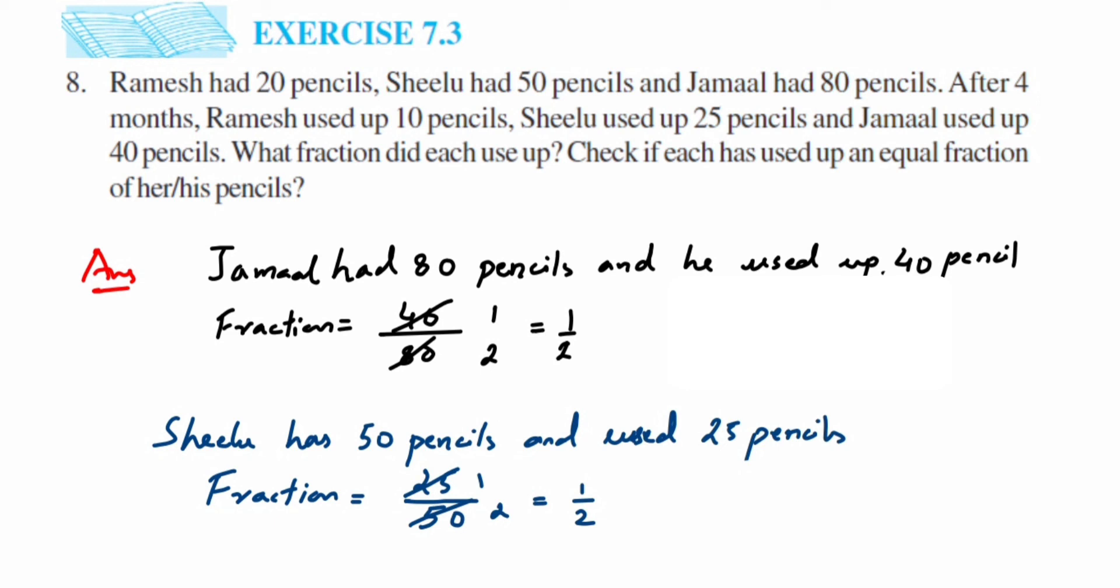We're going to get the answer 1 upon 2. It's 40 ones and 40 twos are 80. So here also we got fraction 1 upon 2. In all three cases we got 1 upon 2. The question is asking, check if they have used equal fraction. Yes, they have used equal fraction. In case of Ramesh also we got 1 upon 2, in case of Sheelu also we got 1 upon 2.